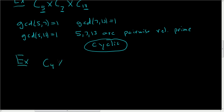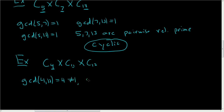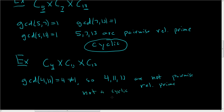Let's try another one: C sub 4 direct product with C sub 11 direct product with C sub 12. If you take the GCD of 4 and 11, you get 1. But the GCD of 4 and 12 — the greatest integer that divides both 4 and 12 — is 4, which is not equal to 1. So 4, 11, and 12 are not pairwise relatively prime, and this is not a cyclic group.